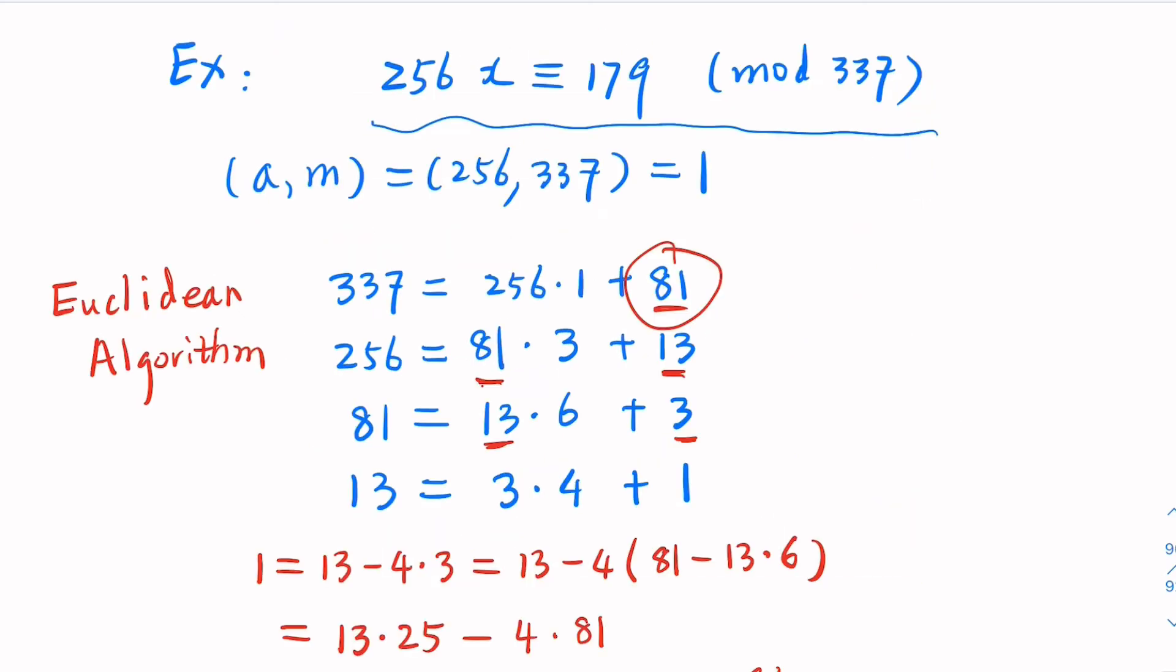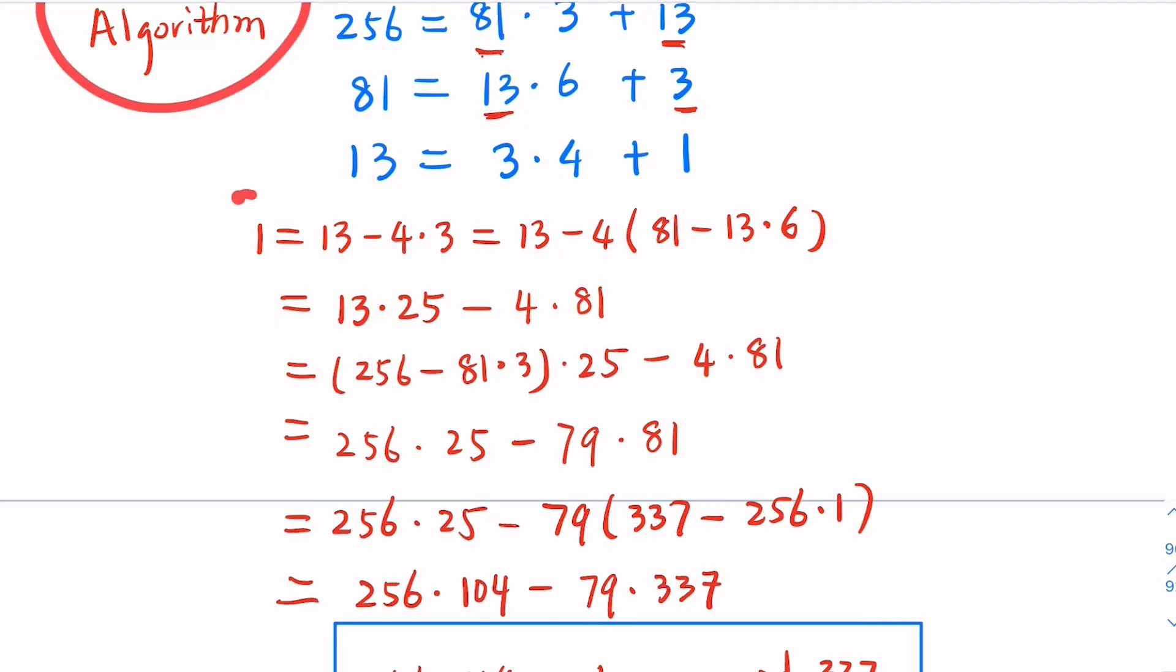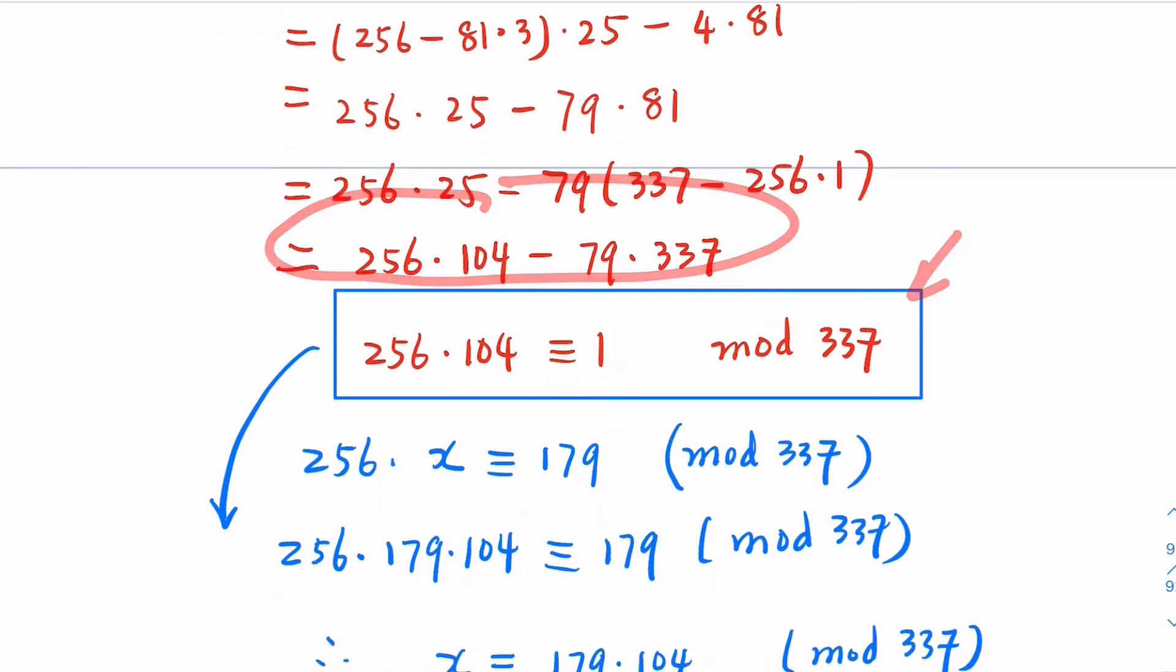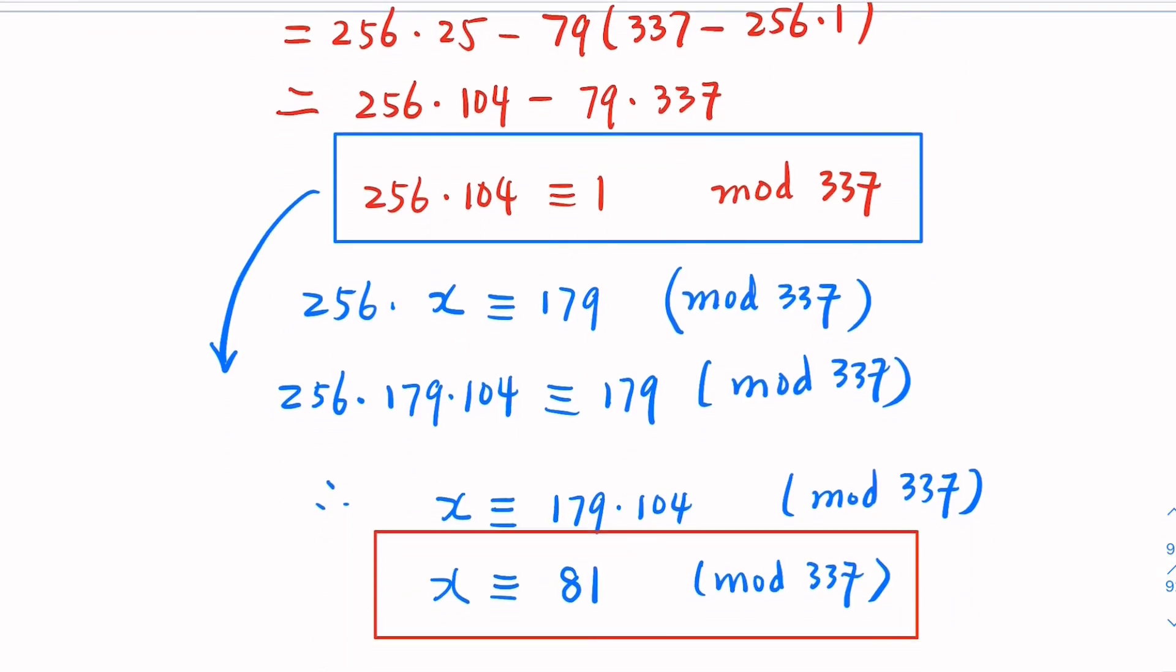So recap. What we do is, whenever you have this modulus and coefficient relatively prime, you use Euclidean algorithm to find out this relation here, x and y. And then you express in the modulus. And for the quantity, you just multiply this by this quantity here, b. And then that's the solution. You simplify it by finding the remainder. And the final solution is 81 mod 337.